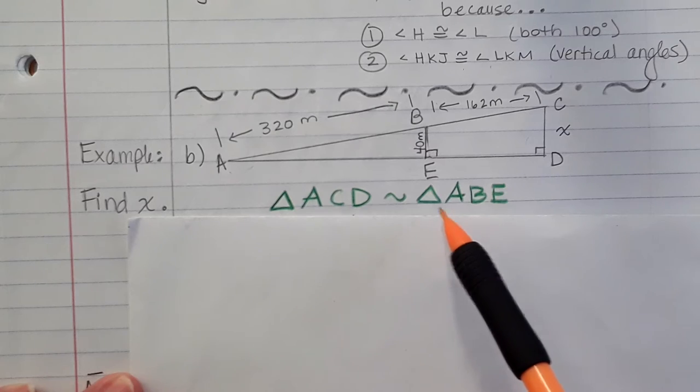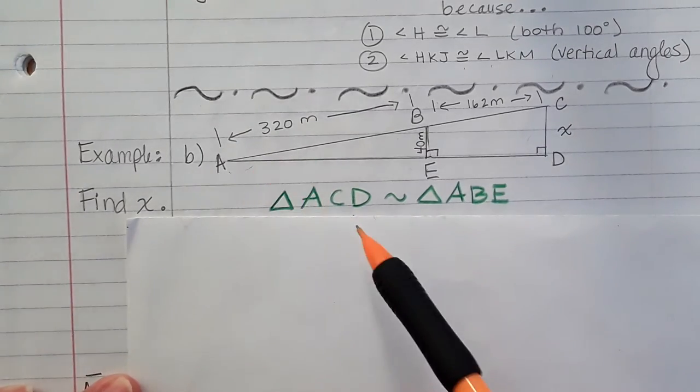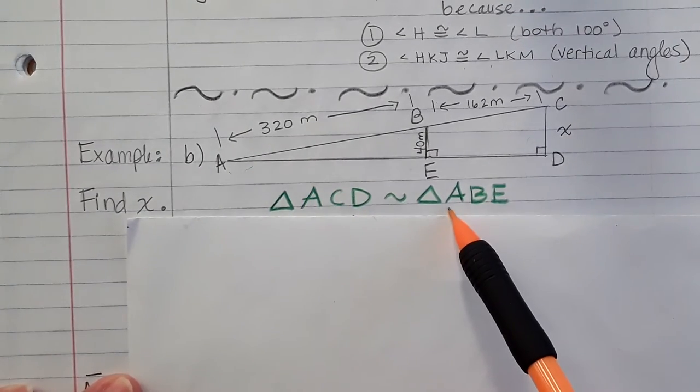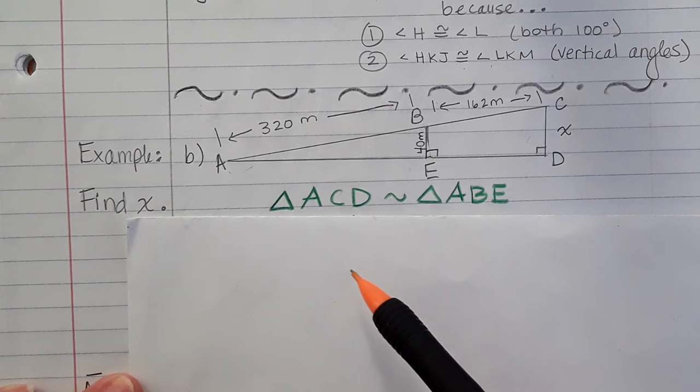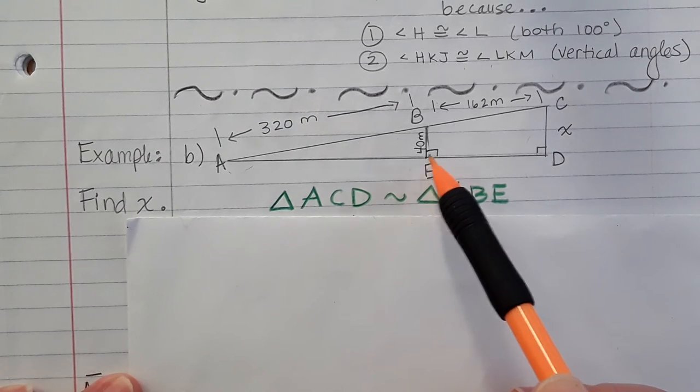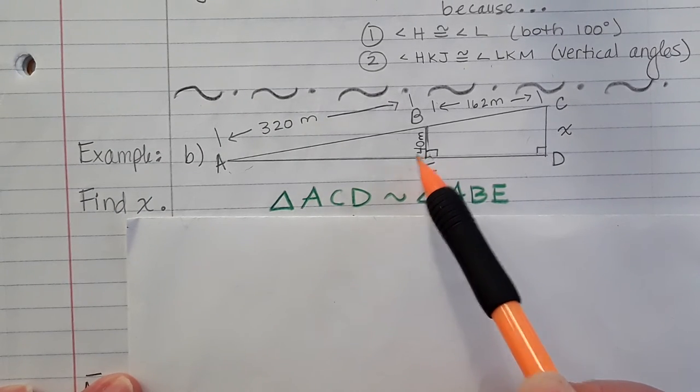First angle that's congruent is angle A. You'll see that in each triangle, they share angle A. So they must be congruent. It's the same exact thing. Second, if this is 90 degrees on this side, it has to be 90 degrees on this side.